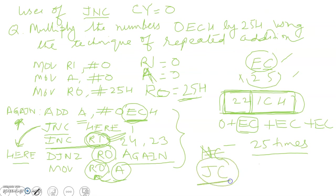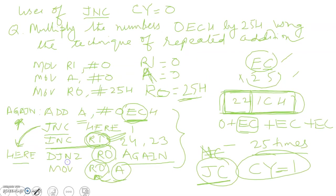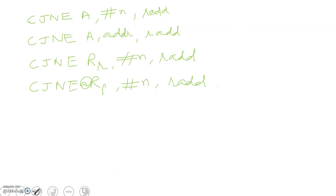Similarly you can understand the functioning of the JC instruction — Jump If Carry. When the carry flag equals 1, then the jump happens; otherwise the instruction is executed sequentially.